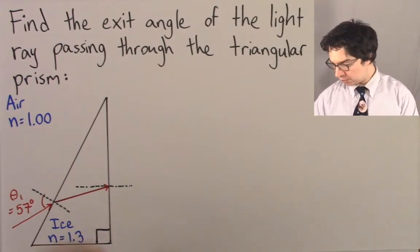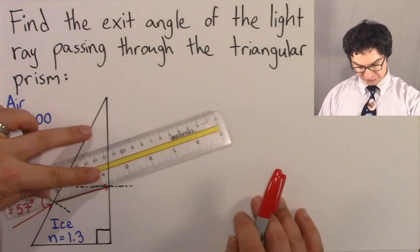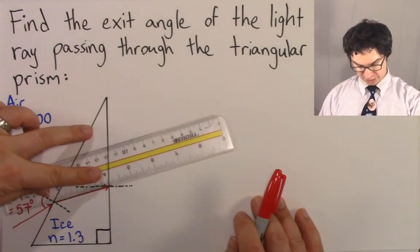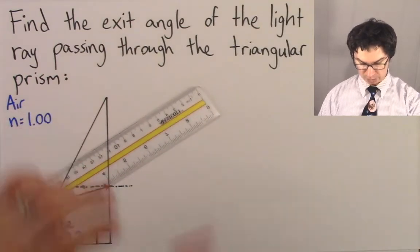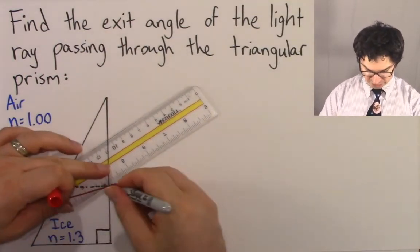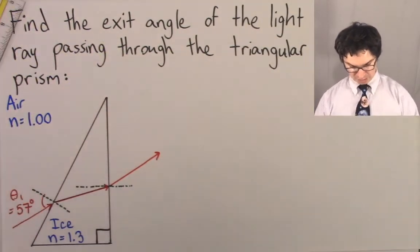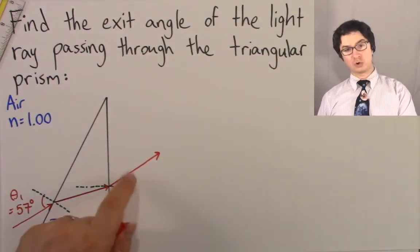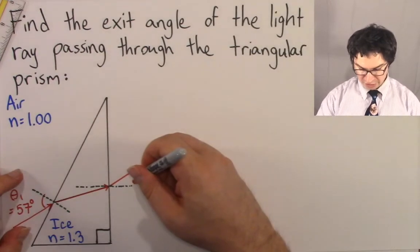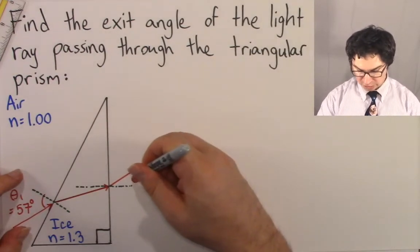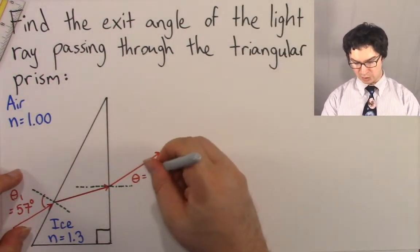So the light ray, when it exits the ice, is going to bend away from the normal. If this is the light ray direction originally, now it's going to bend away from the normal, in approximately this direction over here. Our goal is to find this final angle over here. For now, let's just call it theta. We don't know what it is, but we're going to say theta equals question mark.